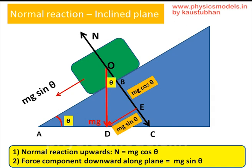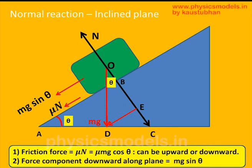Now we just redraw those arrows. mg sin theta is drawn as if it is coming from the center of gravity of the block — you can see the red arrow. We draw the normal reaction N, which is the equal and opposite force by the blue plane on the green block, equal to mg cos theta. The friction force is a function of the normal reaction N, not the weight, so we must be careful. The friction force equals mu times N, shown as a red arrow pointing down because the block is moving upwards. If the block were sliding down, mu N would point upwards — opposite to the direction of motion.